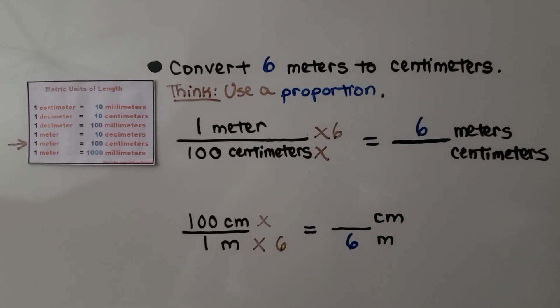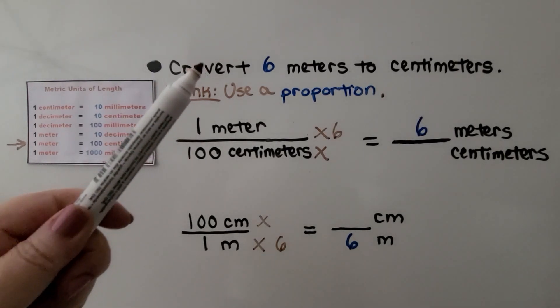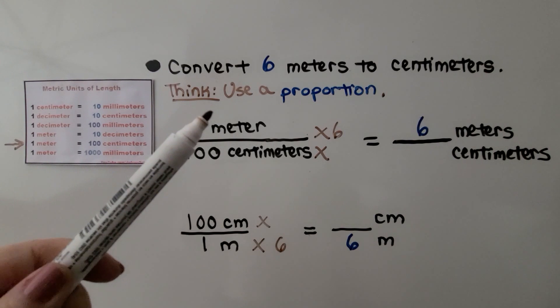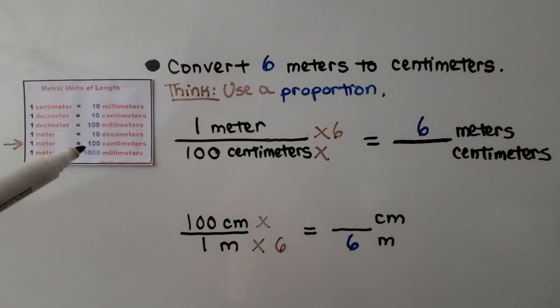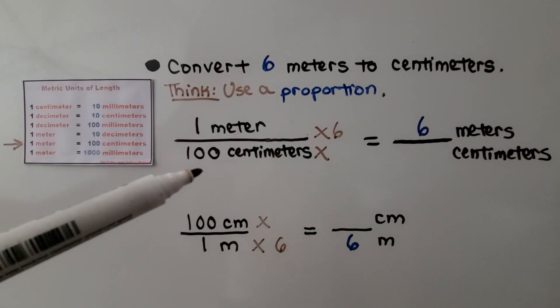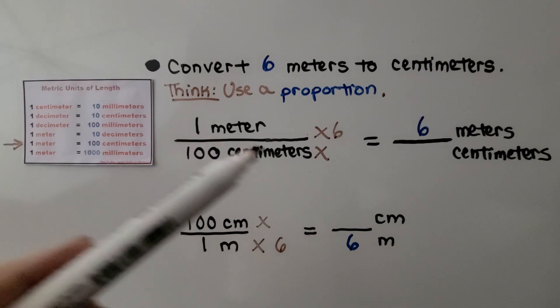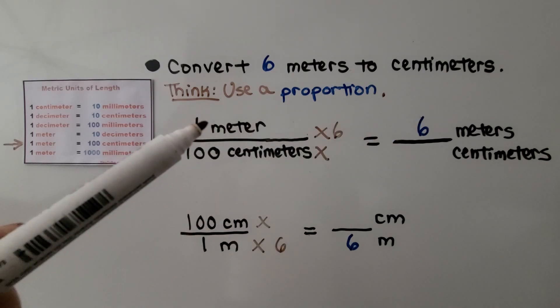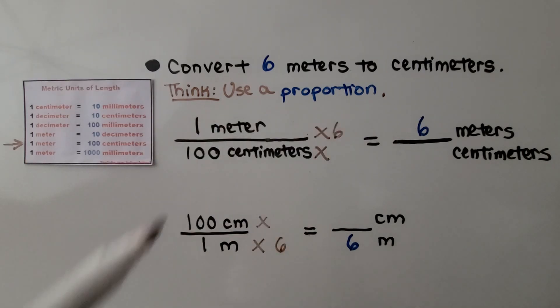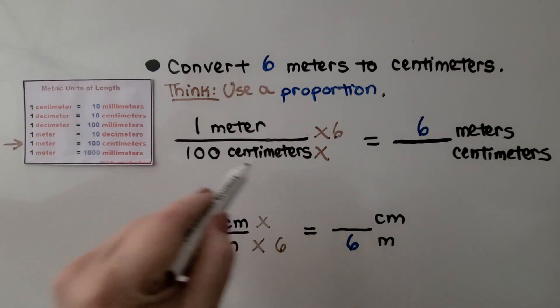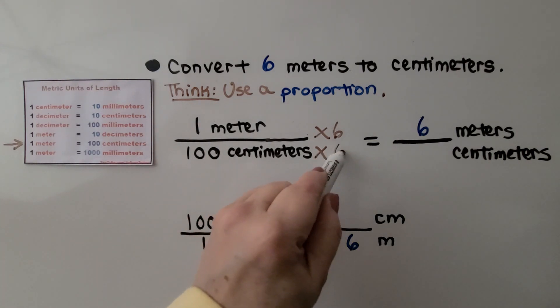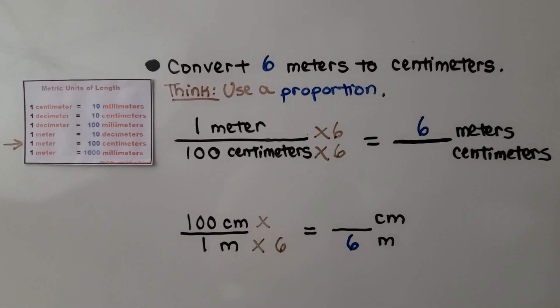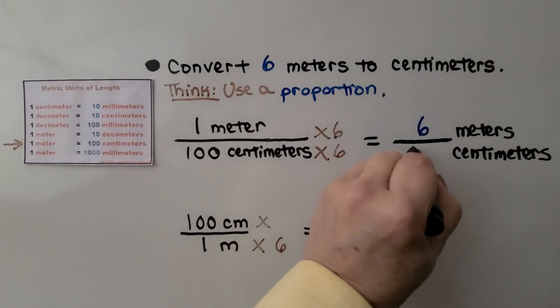Here it's telling us to convert six meters to centimeters. We can use a proportion. One meter is 100 centimeters. We can write one meter over 100 centimeters as a proportion. We have six meters. One meter times six is six meters. That means we need to multiply the centimeters by the same amount, which gives us 600 centimeters.